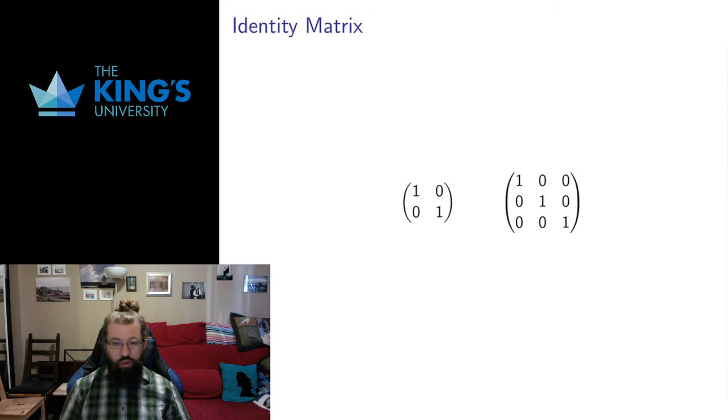In each dimension, there is a special square matrix called the identity matrix. This is the two by two identity matrix, this is the three by three identity matrix. Each square size has one. It has ones on the diagonal and zeros everywhere else. It's going to be useful when we talk about how to use matrices for transformations.